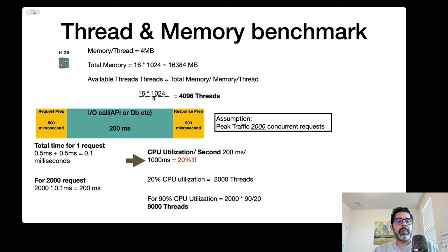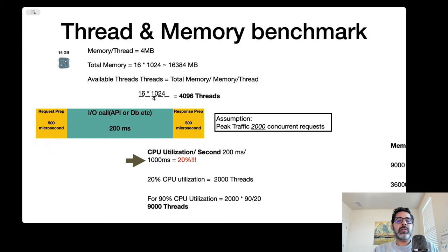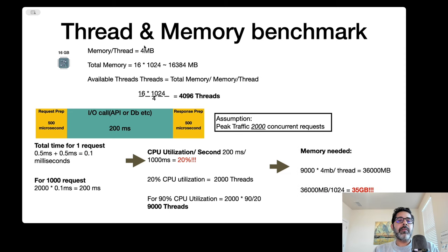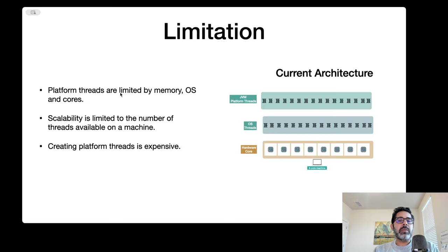If 20% CPU utilization happens at 2,000 threads and I want to reach 90% CPU utilization - because I paid a lot for my machine - I would need 9,000 threads. That's 2,000 times 90 divided by 20. For 9,000 threads at 4 MB each, that's 36,000 MB, or about 35 GB of RAM - which I don't have, so my machine would crash.